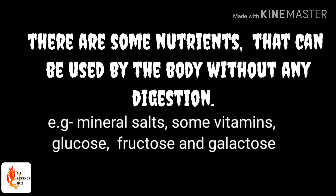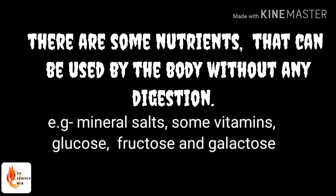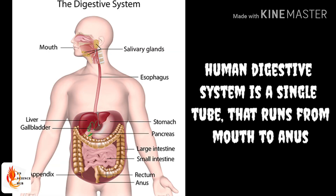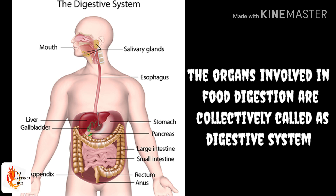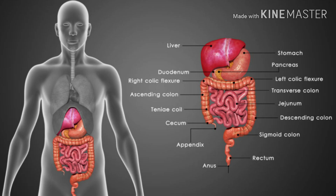There are some nutrients that can be used by the body without any digestion, such as mineral salts, some vitamins, glucose, fructose, and galactose — these are simple sugars. The human digestive system is a single tube structure made up of different organs. This tube-like structure where digestion takes place is known as the digestive tract.